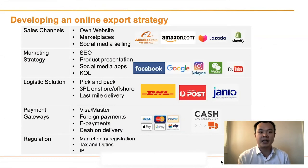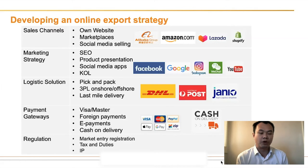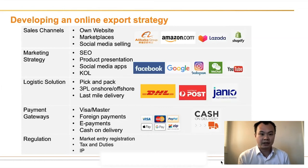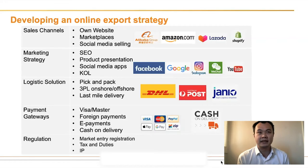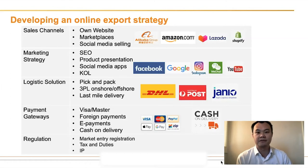The most popular marketing strategies include SEO — how to boost your search result on Google, Baidu, or Naver, depending on which market you're targeting. The second thing to consider is product presentation — how much content and how detailed the content should be varies from market to market. The third area is social media apps — different markets use different social media platforms. The last area is Key Opinion Leaders, also called influencers or KOLs — they are not celebrities but small online influencers with large followings who recommend products that their followers then purchase.